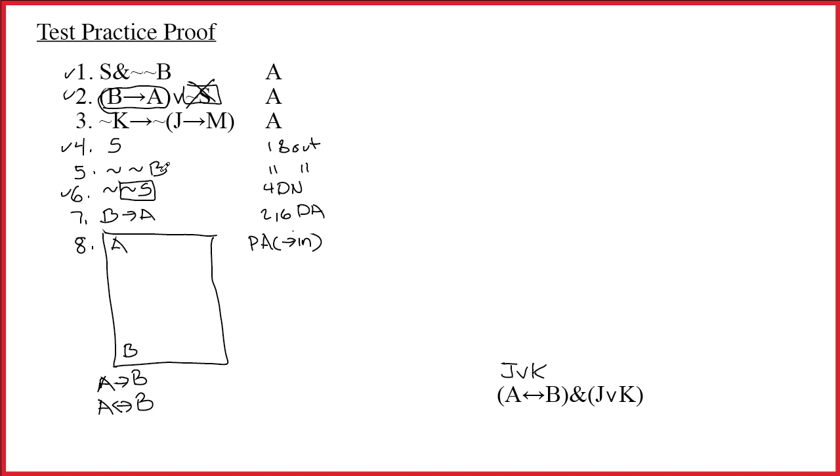Ah, now I'm inspired to do the double negation and drop these two tildes. In fact, finishing this box is trivial. I just do 5 DN, and success! I have proved a arrow b. So that's line ten. It will be eight through nine, arrow in. I don't exactly have a nice neat column there, but I think you're getting the idea. Eleven is going to be seven plus ten, double arrow in. Alright, success! I proved a double arrow b. I'm really halfway done at this point. I now need to prove j wedge k.